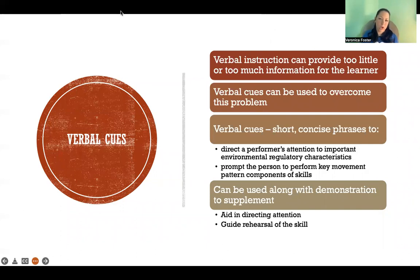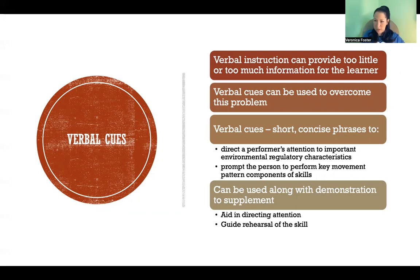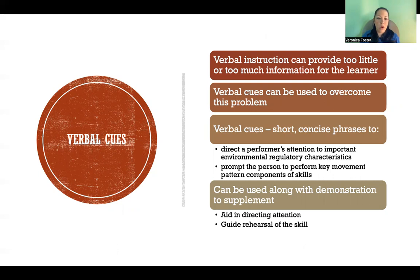Verbal cues are another tool — sometimes lengthy verbal instruction provides too much or too little information and can be hard to calibrate. Verbal cues are short, concise phrases established in a practice environment, so that even in a competition environment you can deliver just a single word or short phrase to guide the athlete. They direct the performer's attention to something specific — either in the environment or in how they're moving — such as 'elbow up,' 'bend the knee,' or 'watch the center.' The exact cue depends on the sport or movement.